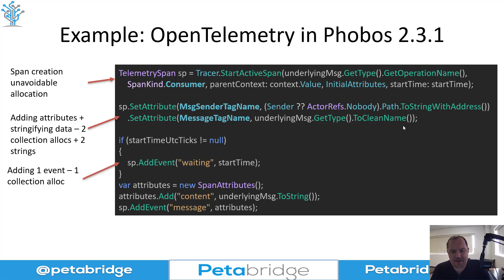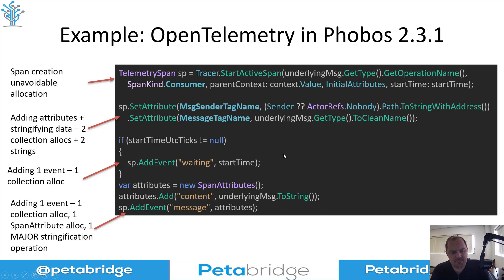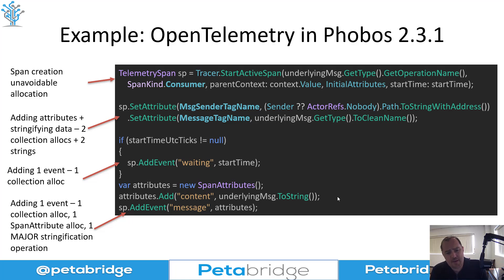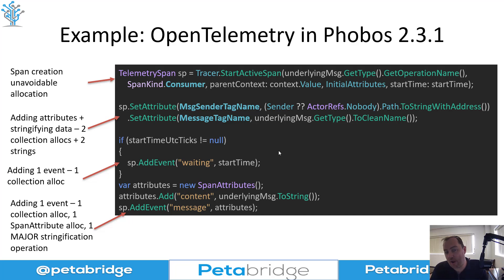Next, we're adding another event for tracking processing time per message — that's one more allocation to the internal events collection inside the telemetry span. Then we're allocating a new span attributes type and converting the underlying message to a string. That can be expensive, particularly if users are using record types in C#. A record type, when you call ToString() on it, fires up a StringBuilder and grabs each property. So this can be quite expensive depending on how ToString() is implemented. There are a whole bunch of allocations all happening while the actor is trying to do its work.